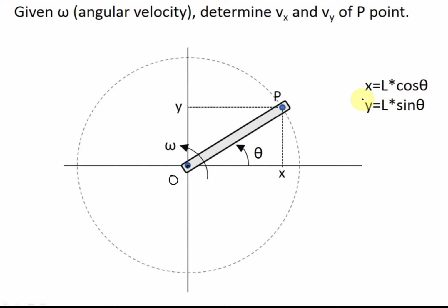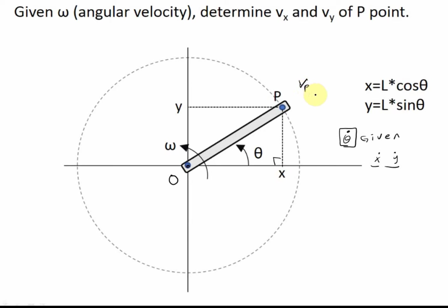If you look at this right-angle triangle, then X equals L cosine theta and Y equals L sine theta. So if we are given the angular velocity omega, we can easily compute X-dot and Y-dot — meaning we can find the X and Y component velocities of point P due to this geometric relationship.